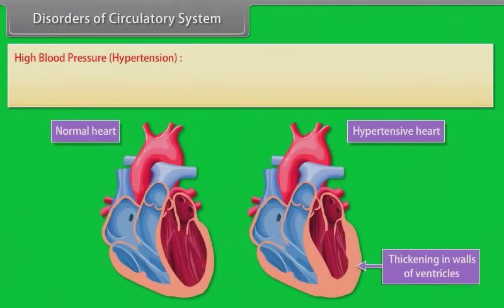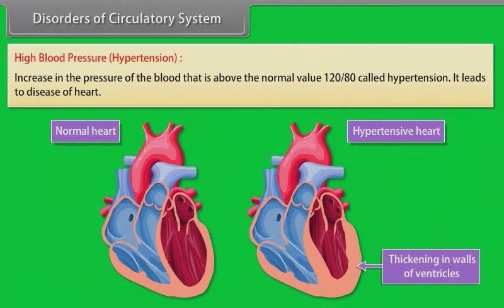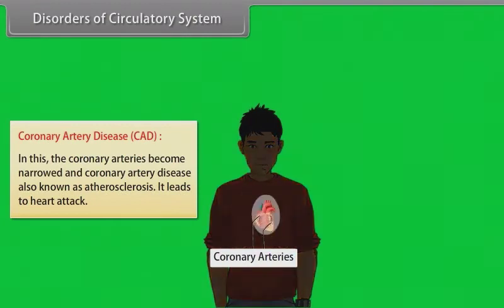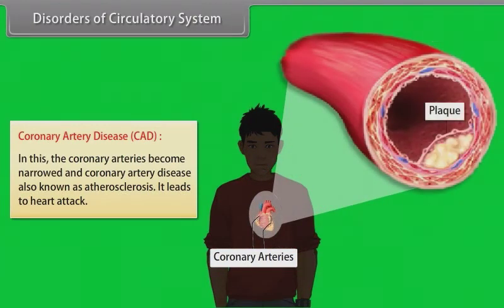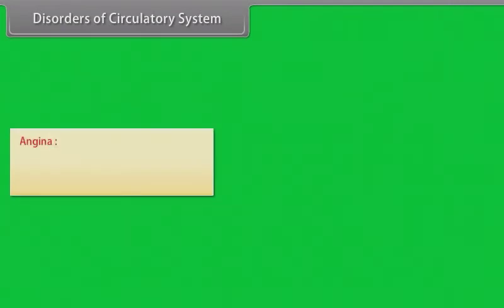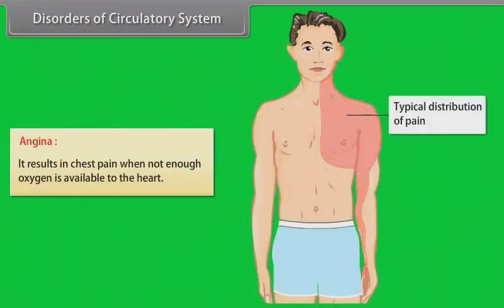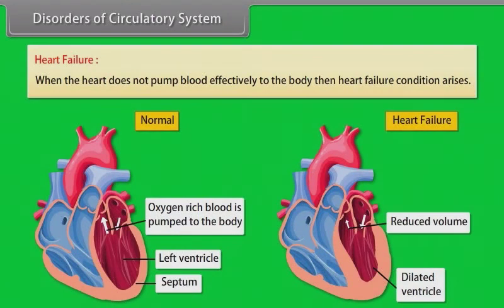Disorders of the circulatory system: Hypertension is high blood pressure above the normal value of 120/80 mmHg, leading to heart disease. Coronary artery disease (CAD), also known as atherosclerosis, involves narrowing of the coronary arteries and can lead to heart attack. Angina results in chest pain when insufficient oxygen reaches the heart. Heart failure occurs when the heart does not pump blood effectively to the body.